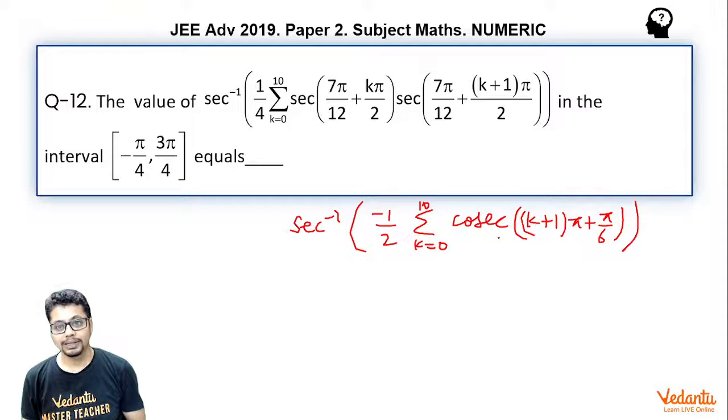K is even for 6 times and k is odd for 5 times. So, that means k plus 1 becomes odd 6 times and k plus 1 becomes even 5 times. So, that means 5 times you would get cosec pi by 6 and 6 times you would get minus cosec pi by 6.